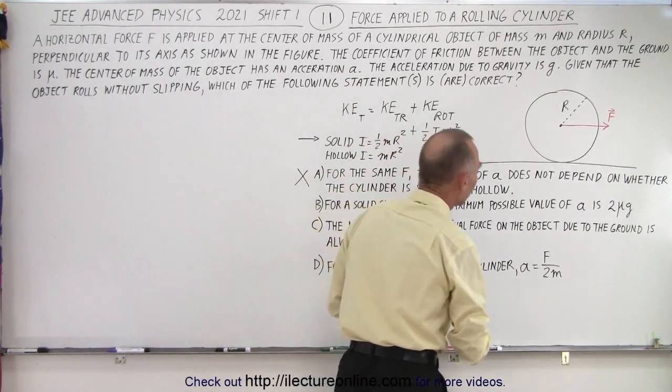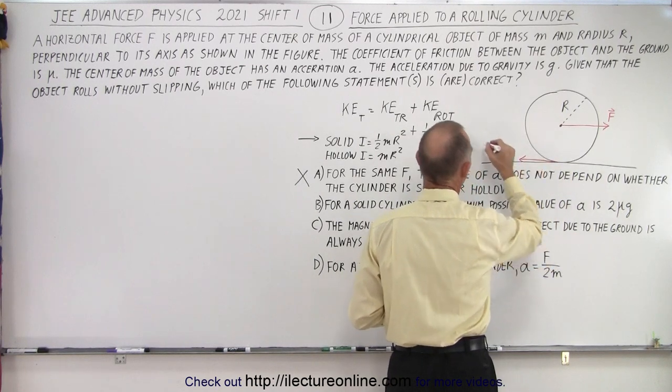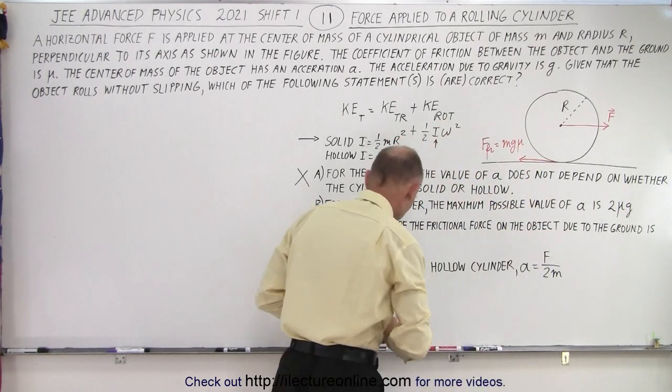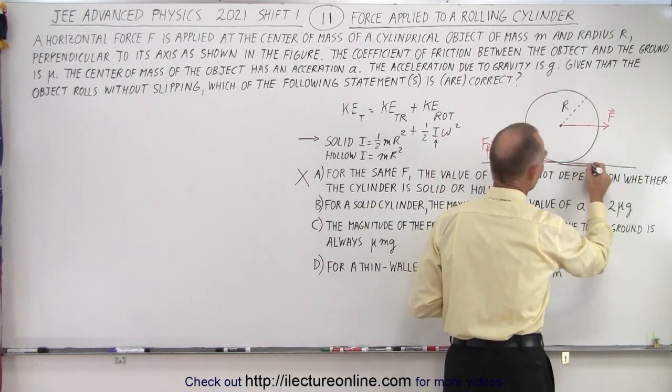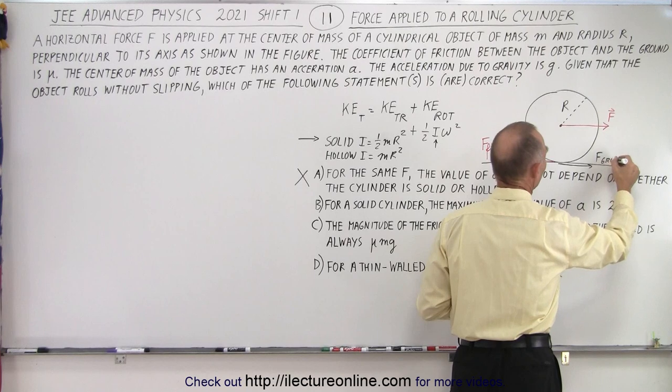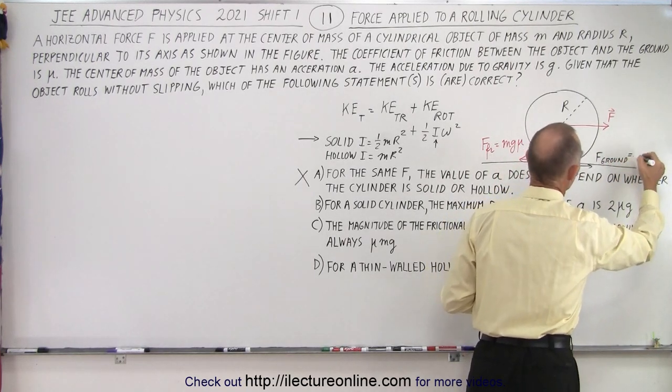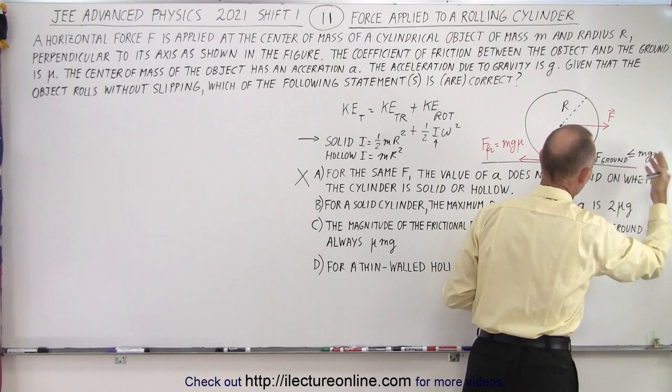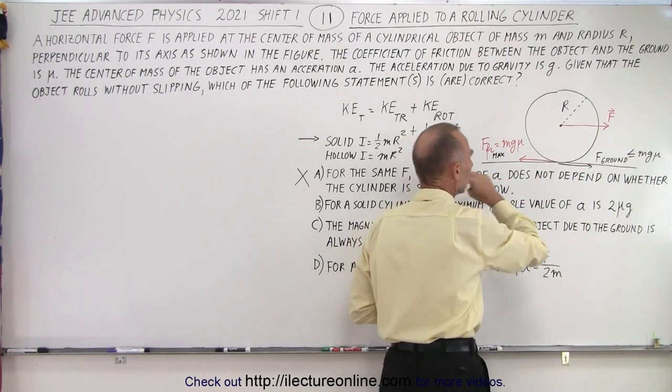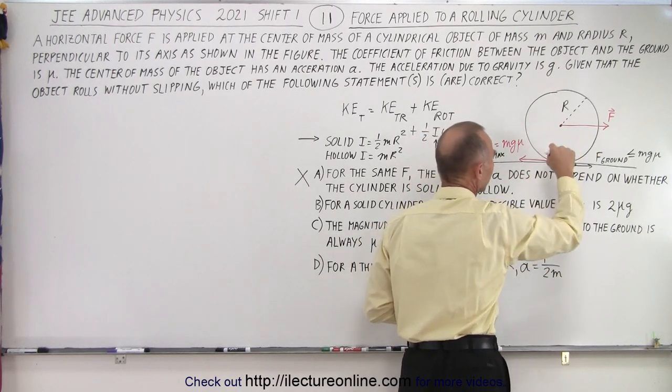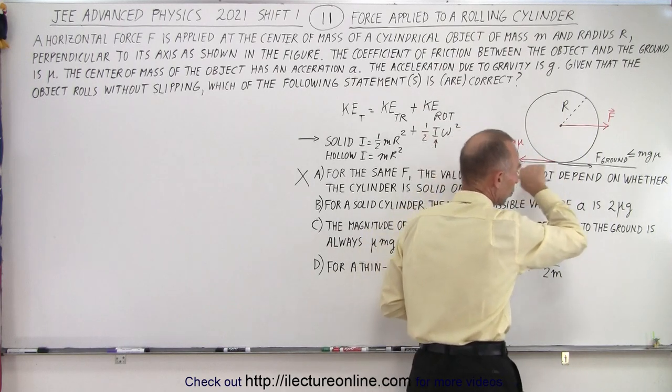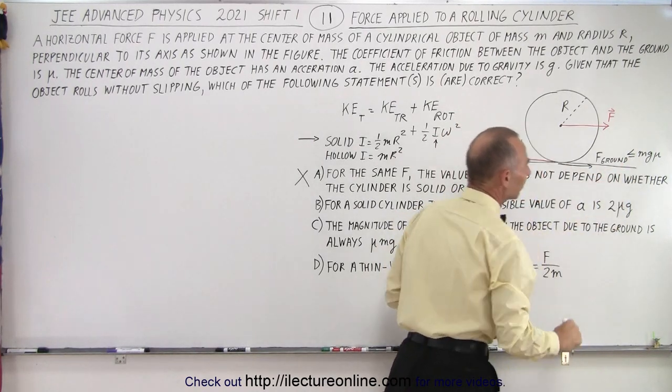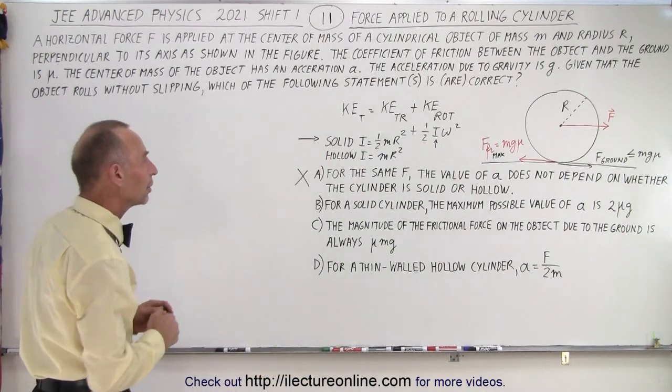So what we can do here is we can realize that there's a friction force, force friction, and that's going to be equal to the weight of the object, which is mg times the coefficient of friction mu. And then, of course, the ground will push back with an equal but opposite force, so force on the ground, and that is going to be equal to, well, it's the force pushing back is going to be equal to less than or equal to mg mu, because that's the maximum friction force we can have. So it'll be anywhere from zero to mg mu, depending upon how big this force is. The bigger this force, the bigger the friction force needs to be in order to push the cylinder forward, and therefore the force of the ground pushing back on the cylinder will be less than or equal to mg mu.